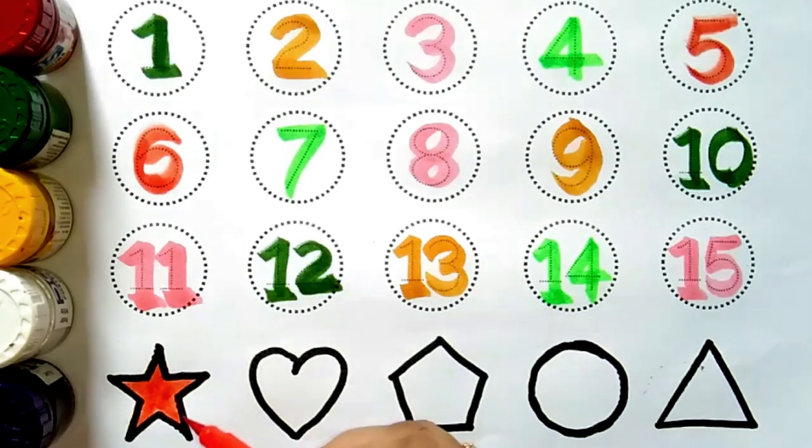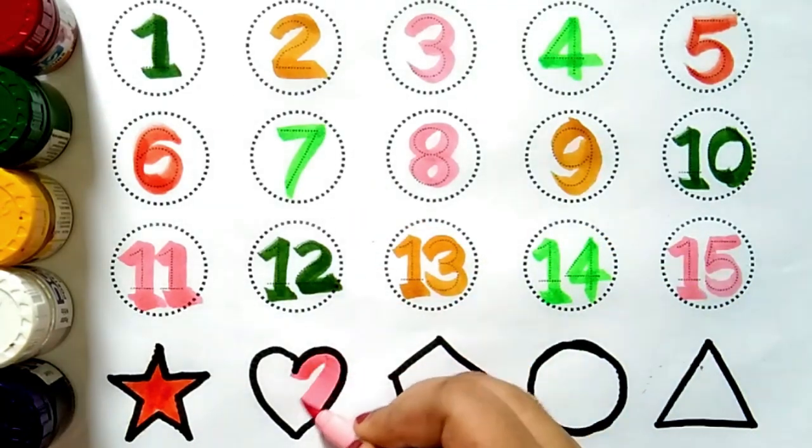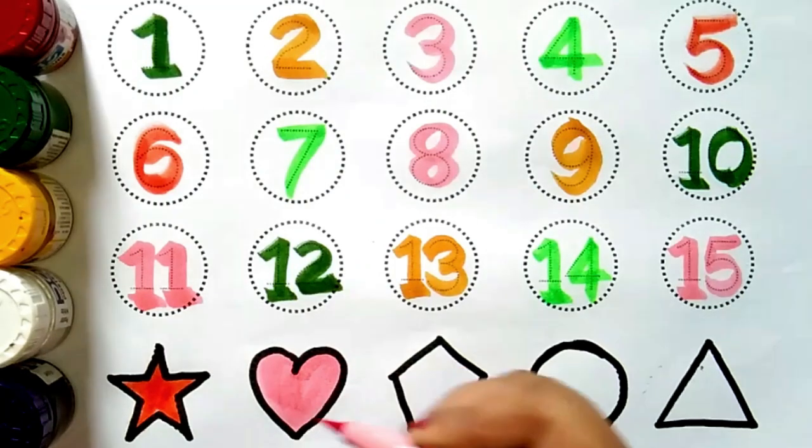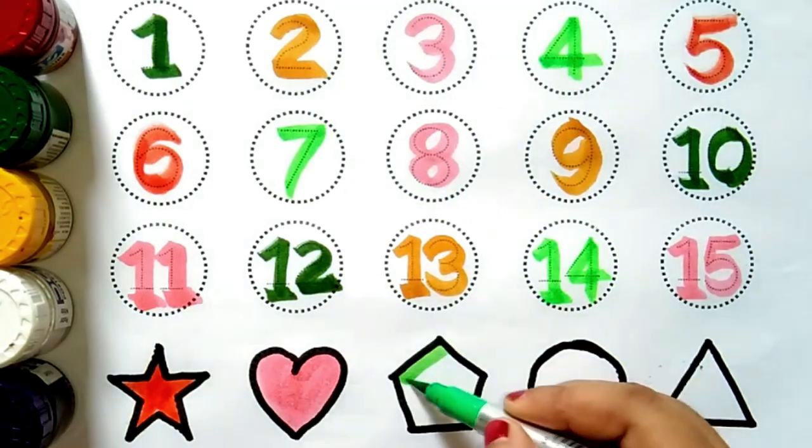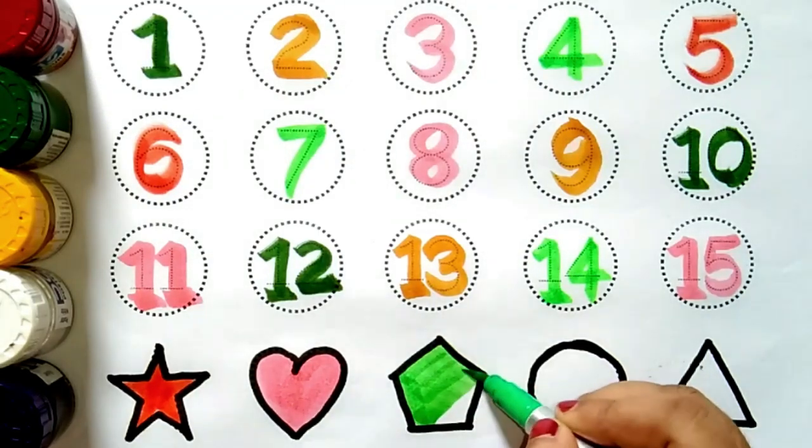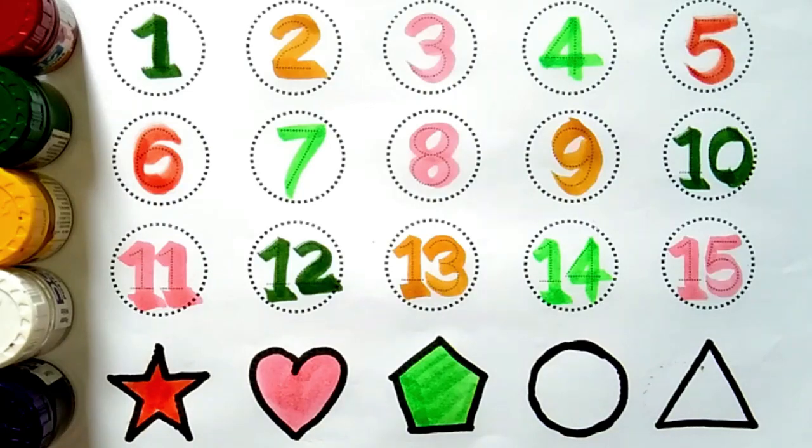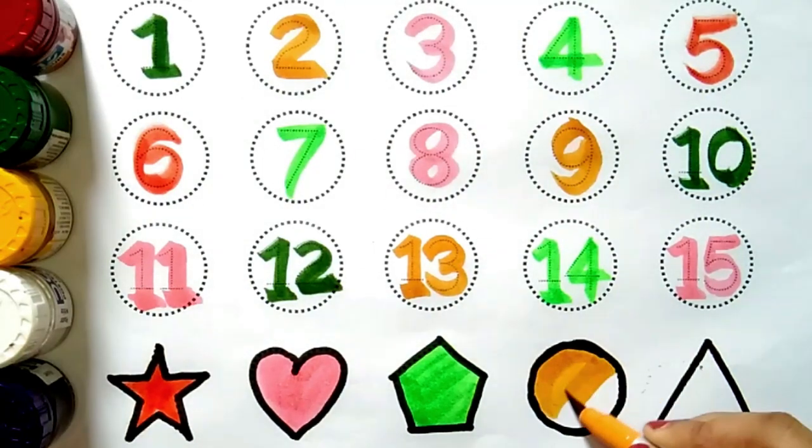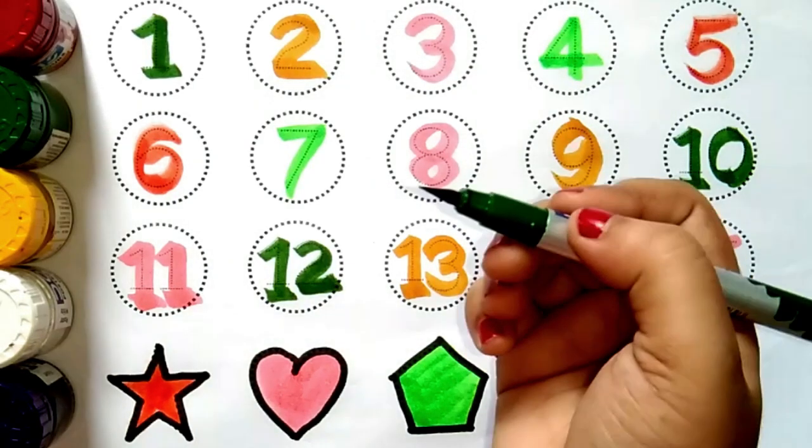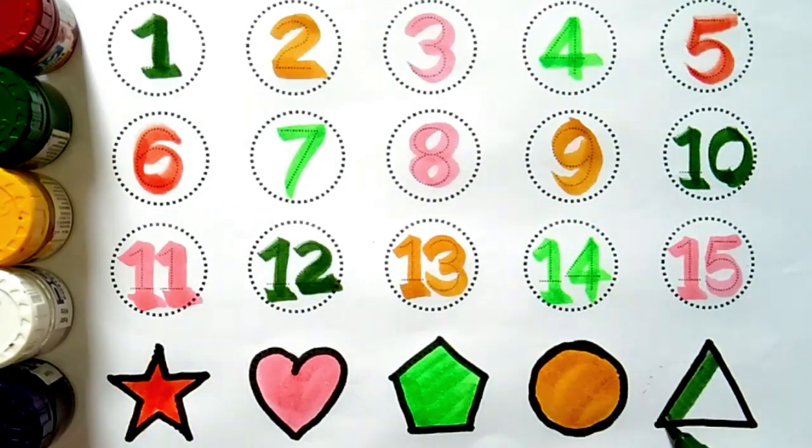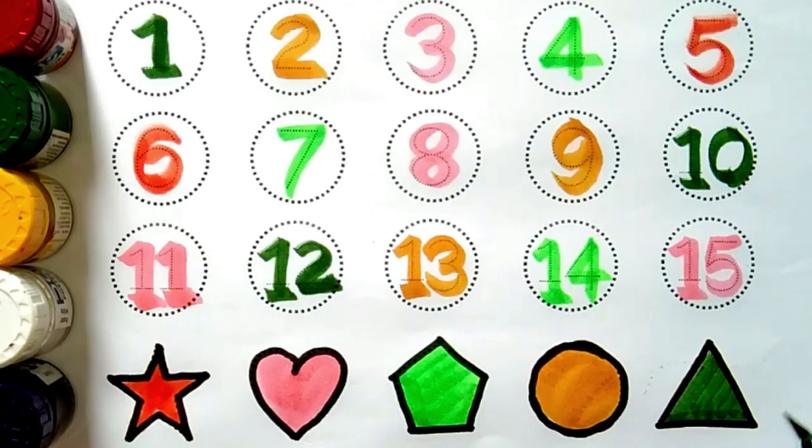Orange color. Star. Light pink color. Heart. Light green color. Pentagon. Yellow color. Circle. Green color. Triangle.